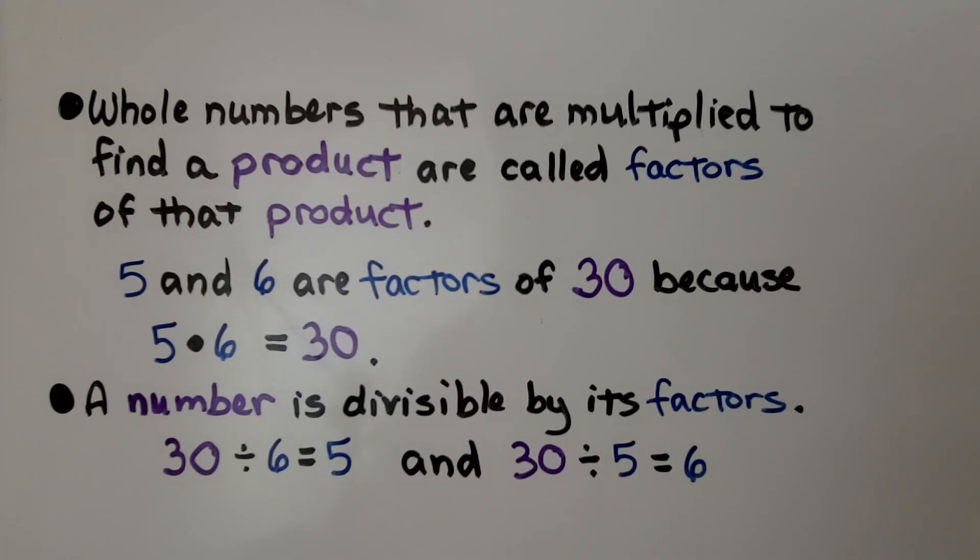A number is divisible by its factors. 30 divided by 6 is equal to 5 and 30 divided by 5 is equal to 6.